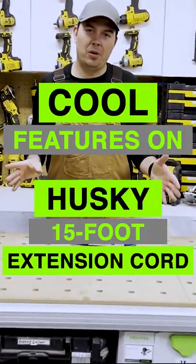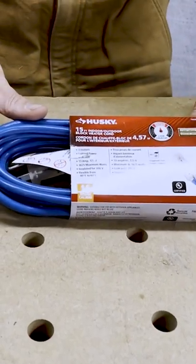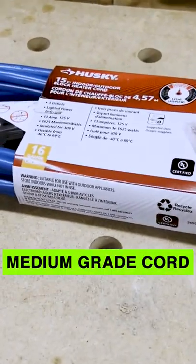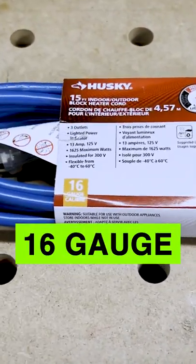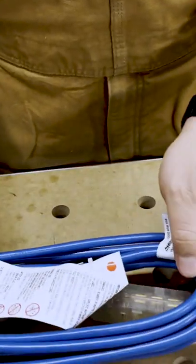Today we're going to take a look at an extension cord. This is by Husky. It is 15 feet long. It's the medium grade cord, so it's 16 gauge. These will stay flexible up to minus 40 degrees Celsius, so it's perfect for the winter.